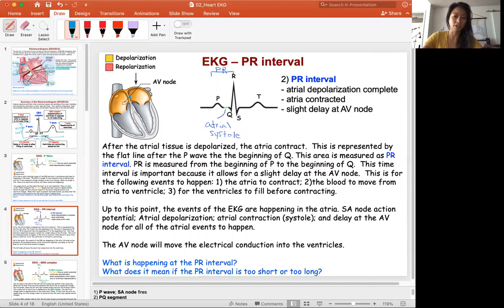That contraction allows the atria to pump, move the blood—the rest of the blood—into the ventricles to fill the ventricles with blood before the next step. So this is also the delay before the next event. This is where the AV delay also happens. This is the check.